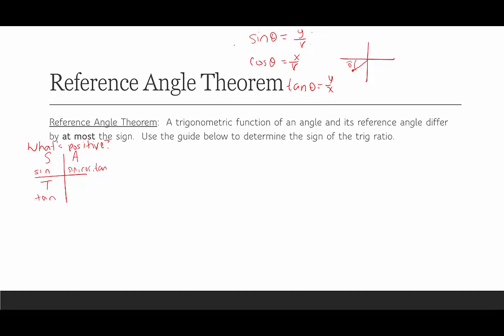In quadrant 4, x is positive and y is negative. Sine is negative — ruled out. Cosine is positive over positive — positive. Tangent is negative over positive — negative. So the only positive function in quadrant 4 is cosine. If we remember the mnemonic 'All Students Take Calculus,' starting in quadrant 1, that tells us what's positive in each quadrant — where Students = Sine, Take = Tangent, Calculus = Cosine.